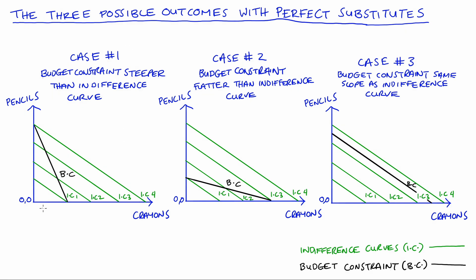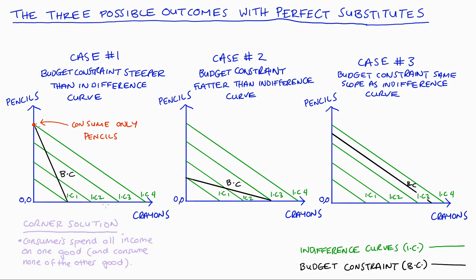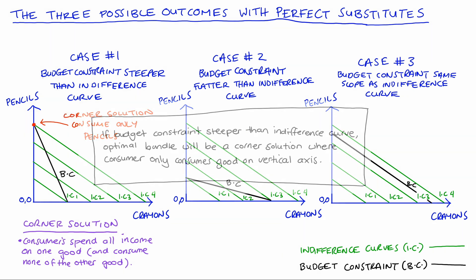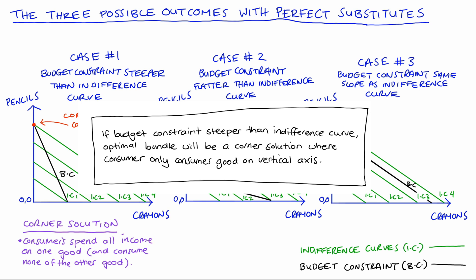In case one, the highest indifference curve we can reach with our budget constraint is IC4, and the bundle associated with that is right where our budget constraint meets the axis — so I'll put a red dot there. Here our consumer is only consuming pencils. This is what we call a corner solution, where our consumer spends all of their income on just one good and consumes none of the other. If the budget constraint is steeper than the indifference curve, the optimal bundle is a corner solution on the vertical axis.